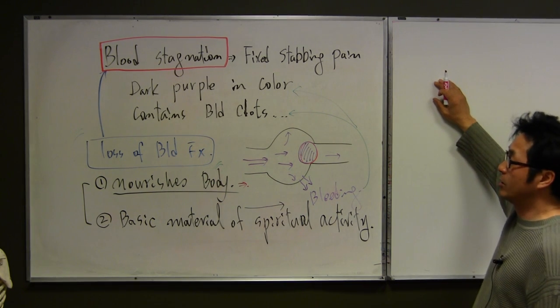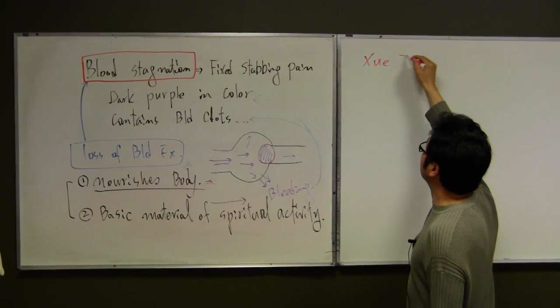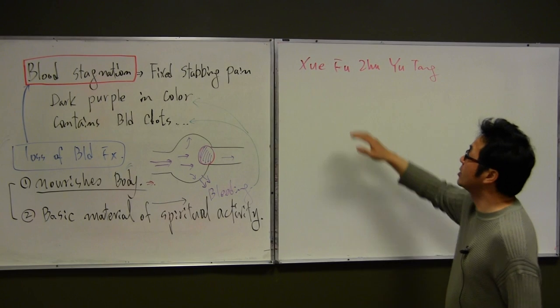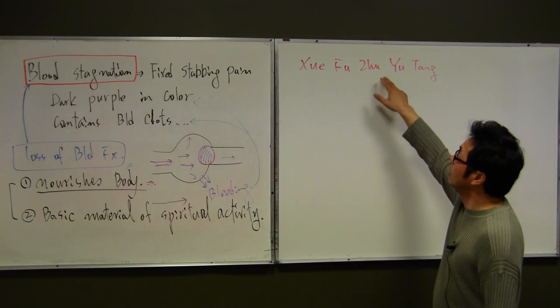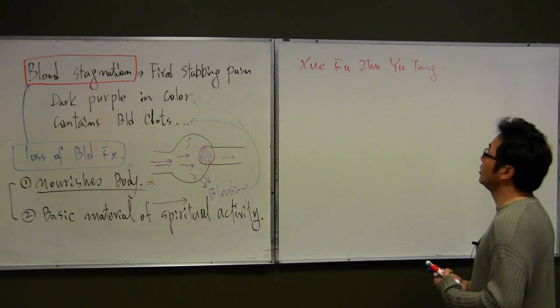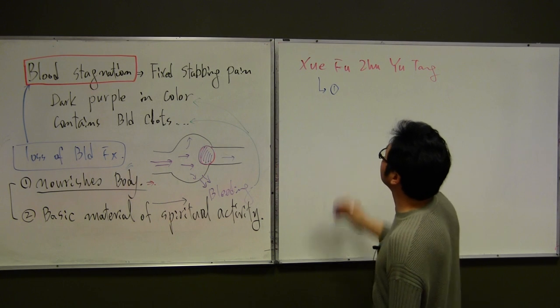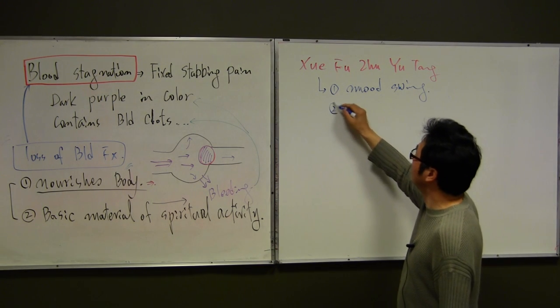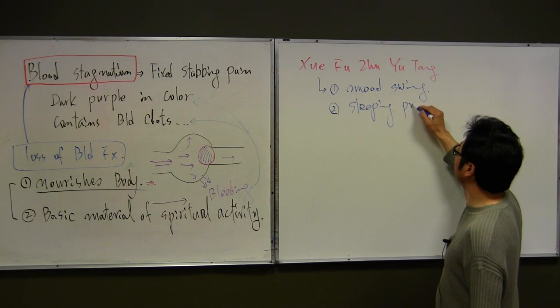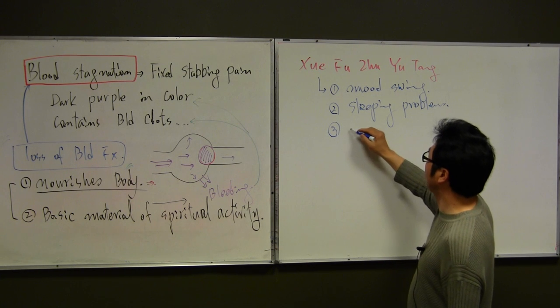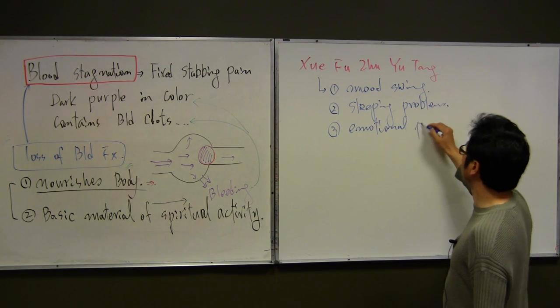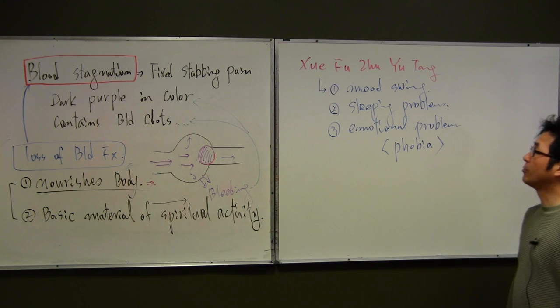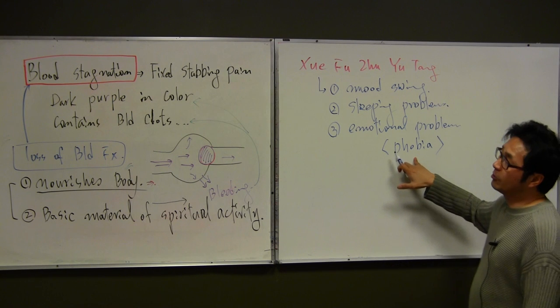And then, there's some signs and symptoms related with the blood stagnation. Especially, the Xuefu Zhuyu Tang, which is good for engineering factory, which means blood stagnation above the diaphragm, include the head regions. You may find out the indication of this formula. You may find out this one: the mood swing, and also sleeping problem, and also emotion. Especially, it includes phobia too. Phobia or so.